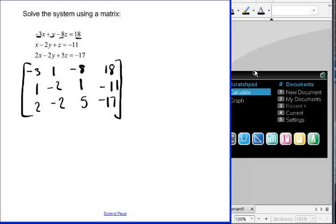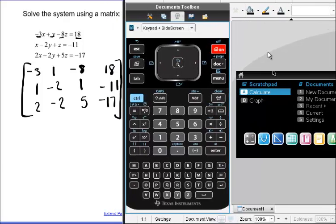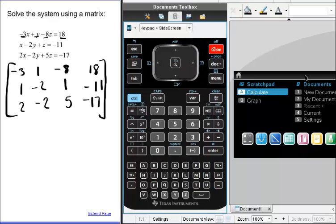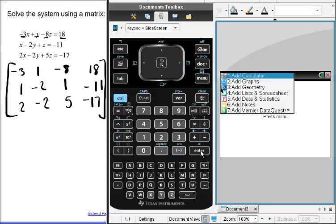We're going to put this matrix into your calculator, and then the calculator will give us the answer. So you're going to open up a new document from your home screen, choose new document, and add a calculator.